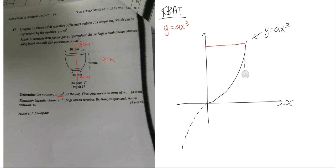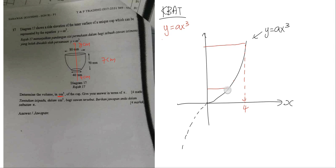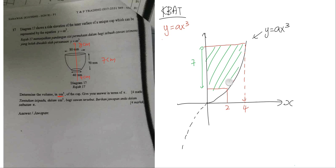From this value going down here, you will get a value of 4 here. Because the other 4 cm is on the negative side, you will get a value of 2 there. So total from here to here, it will be 7 cm. Now, what we need to do is basically rotate this area 360 degrees on the y-axis to get the volume of the cup. We know here is 4 and here will be 2.